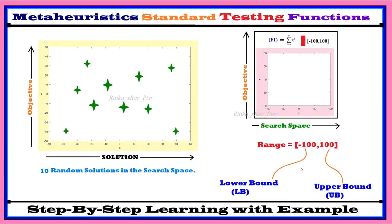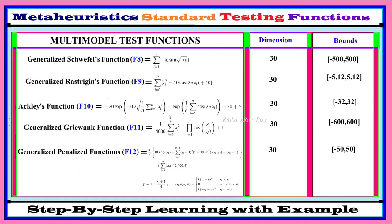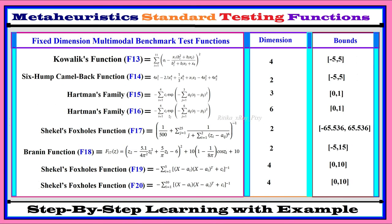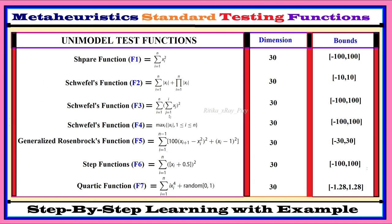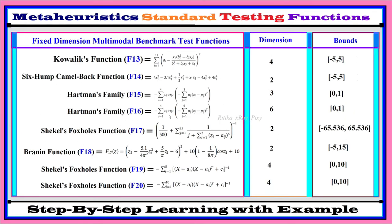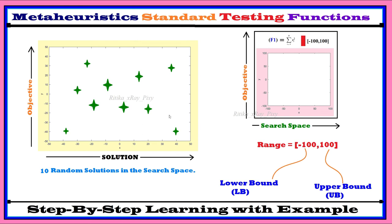Objective functions guide the whole search process toward the global solution. We have seen different types of test functions, their dimensions and boundaries, which we can use for algorithm testing. We can compare algorithms using test functions and check their performance — stability, accuracy, efficiency, and speed. That's all about this video. If you have any questions, please comment below. Thanks for watching.